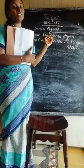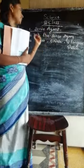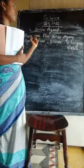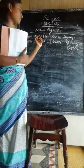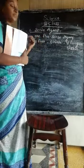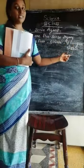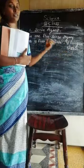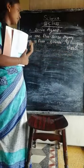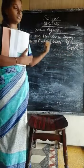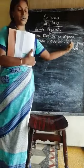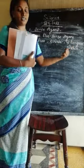Everybody knows there are five types of sense organs. What are they? Eyes, ears, nose, tongue, and skin.